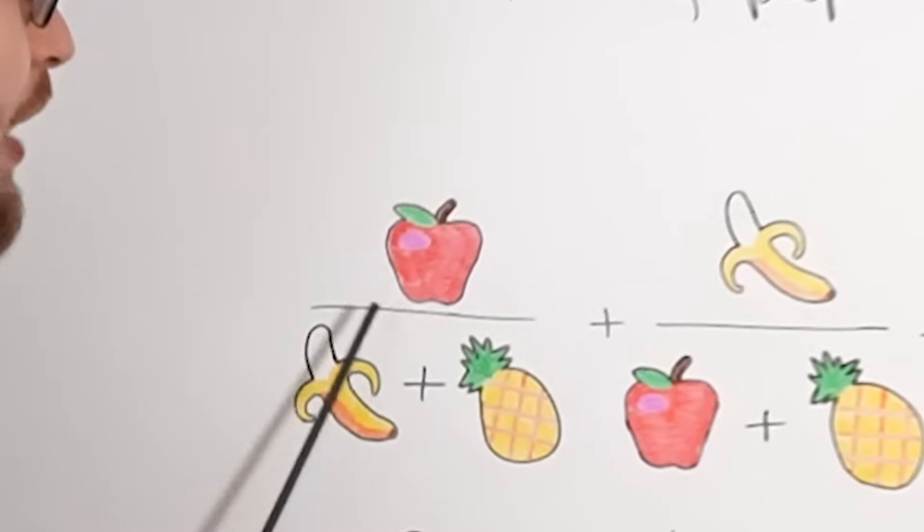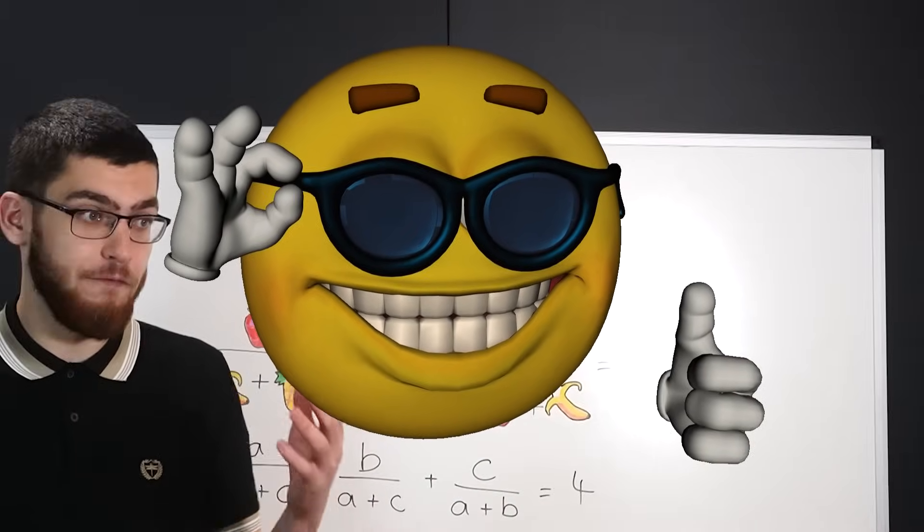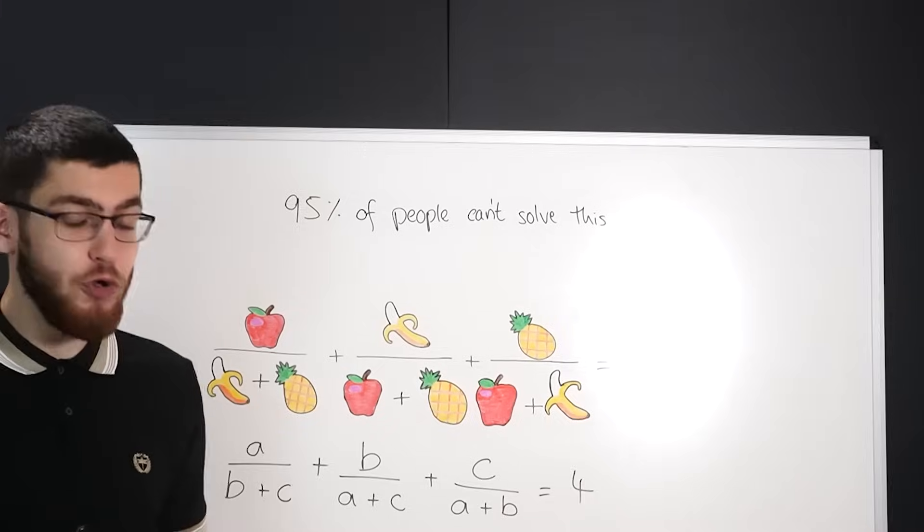The first thing we're going to do is switch the variable names over to A, B, and C because while it is totally mathematically valid to use fruits as variable names, it's also completely ridiculous.